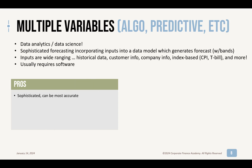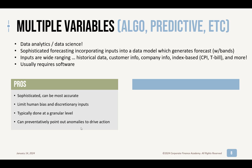The pros: this is sophisticated and can very likely be the most accurate. These multiple variables can be very good at predicting the future as long as things are stable. Typically these limit human bias and discretionary inputs — it's based on data. It's typically done at a granular level; because it's in a tool, you can decide which level, all the way down to the SKU level. And it can preventatively point out anomalies to drive action — if it sees something is skewing the forecast, you can have triggers that will tell you.